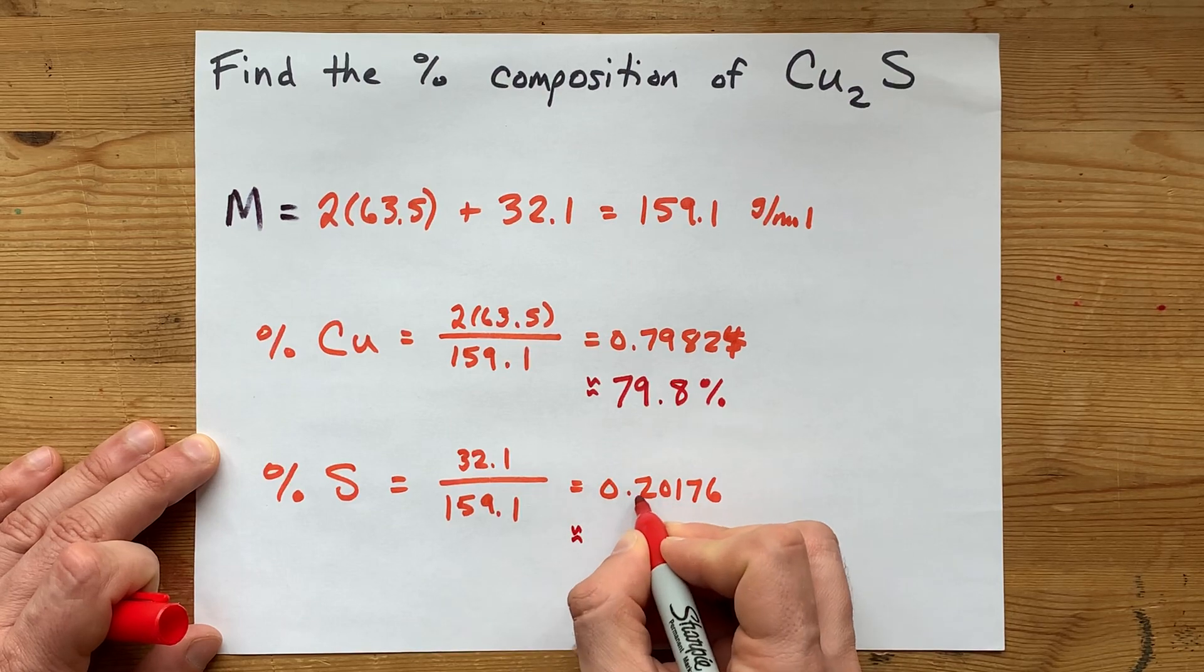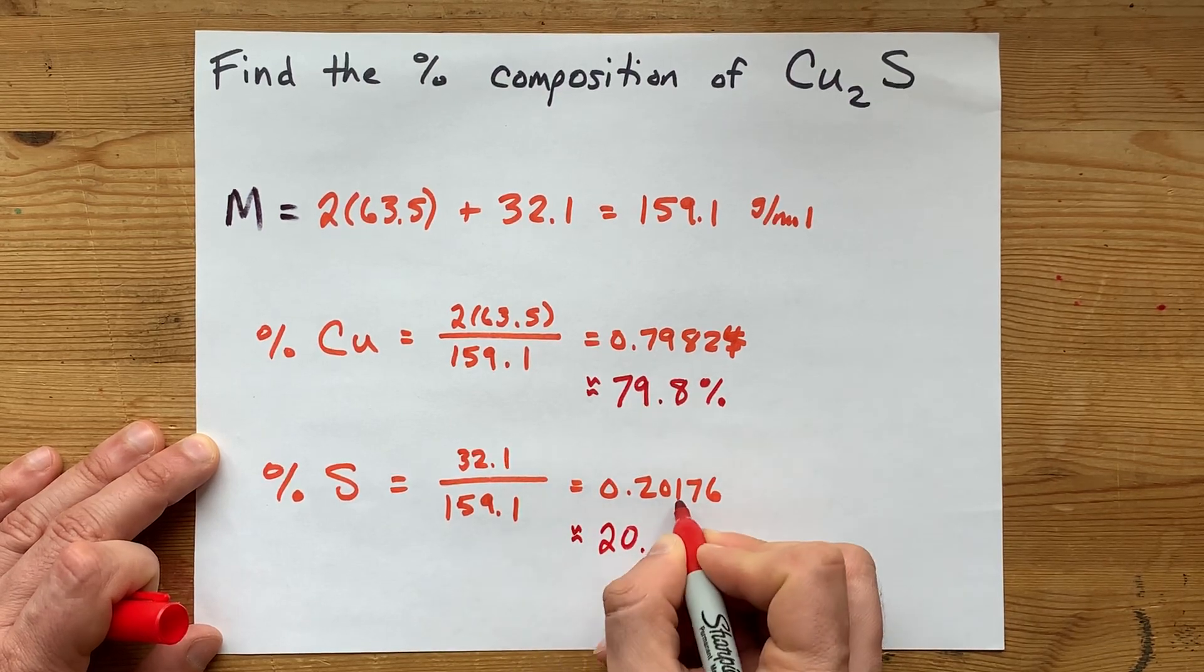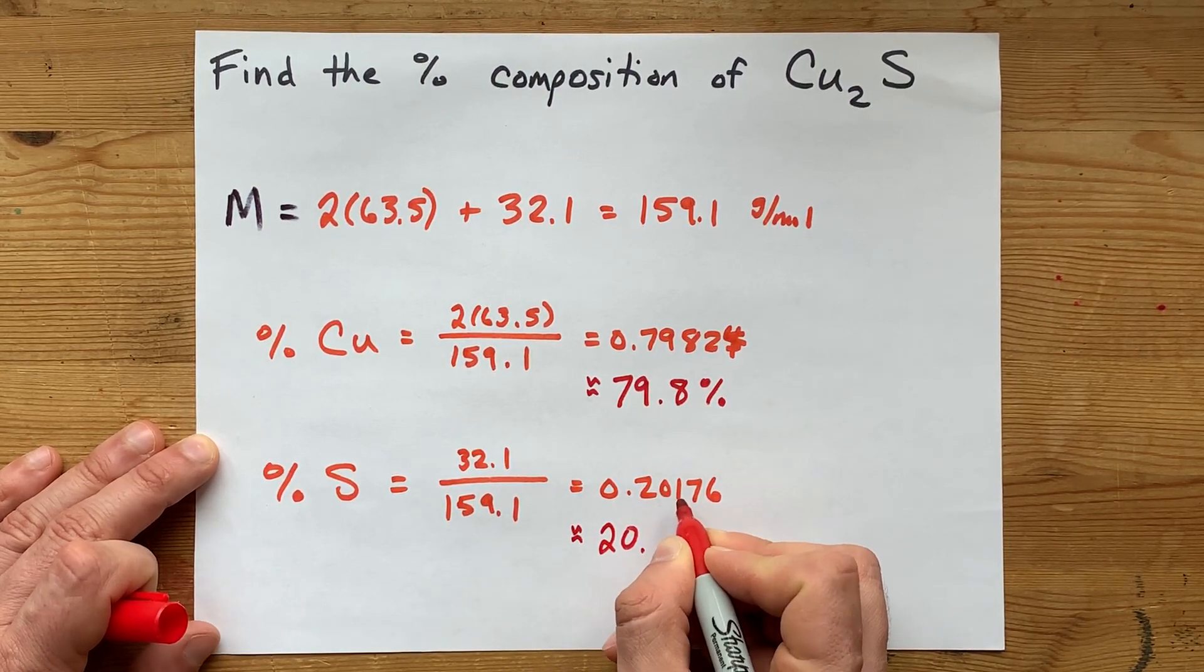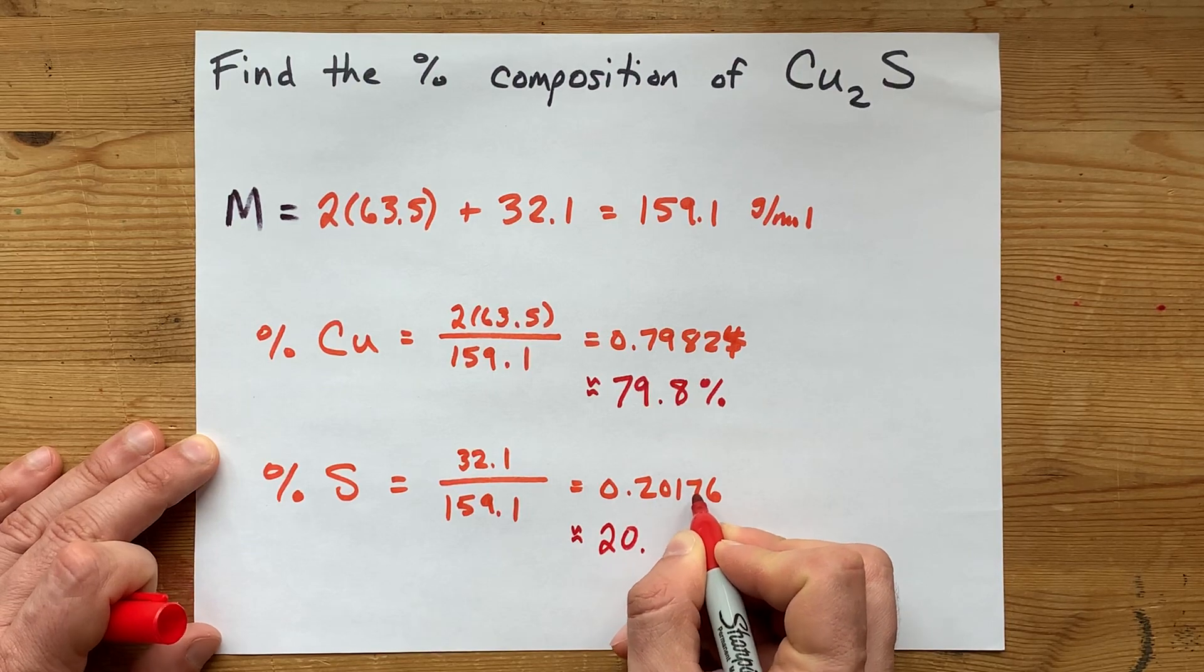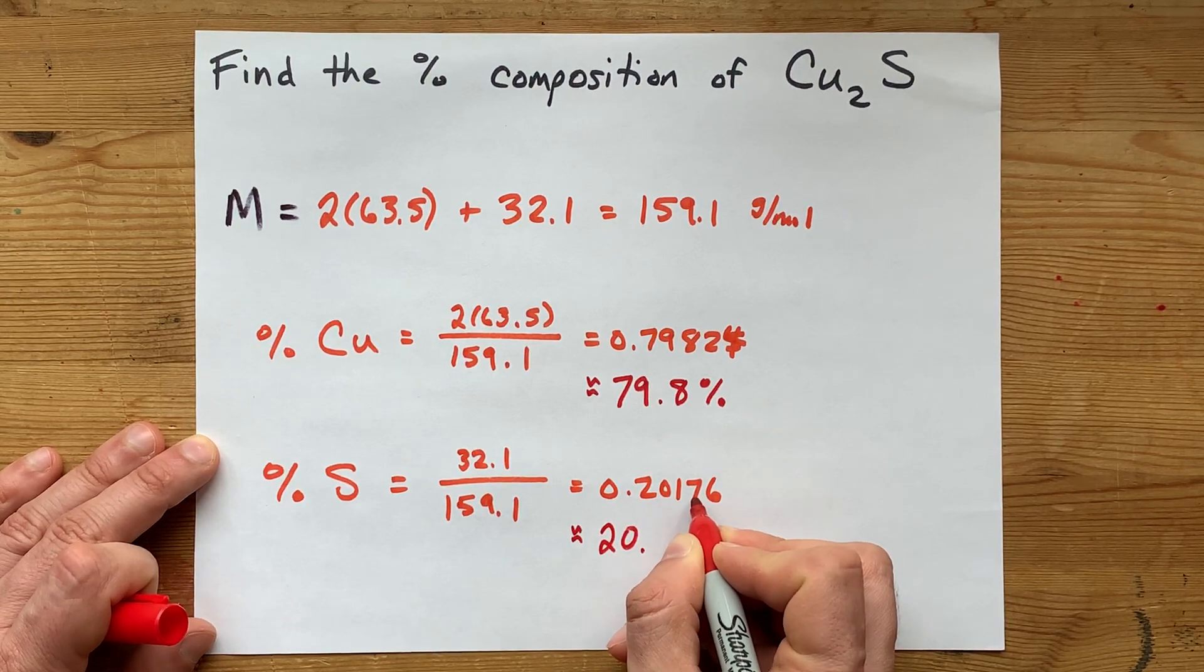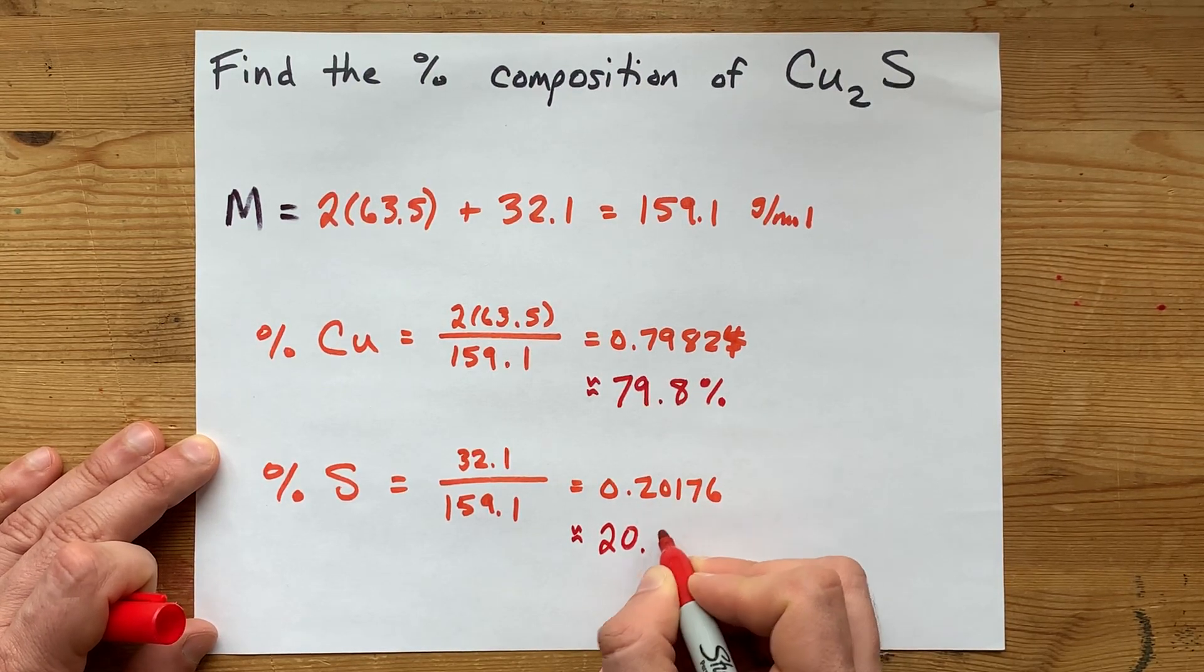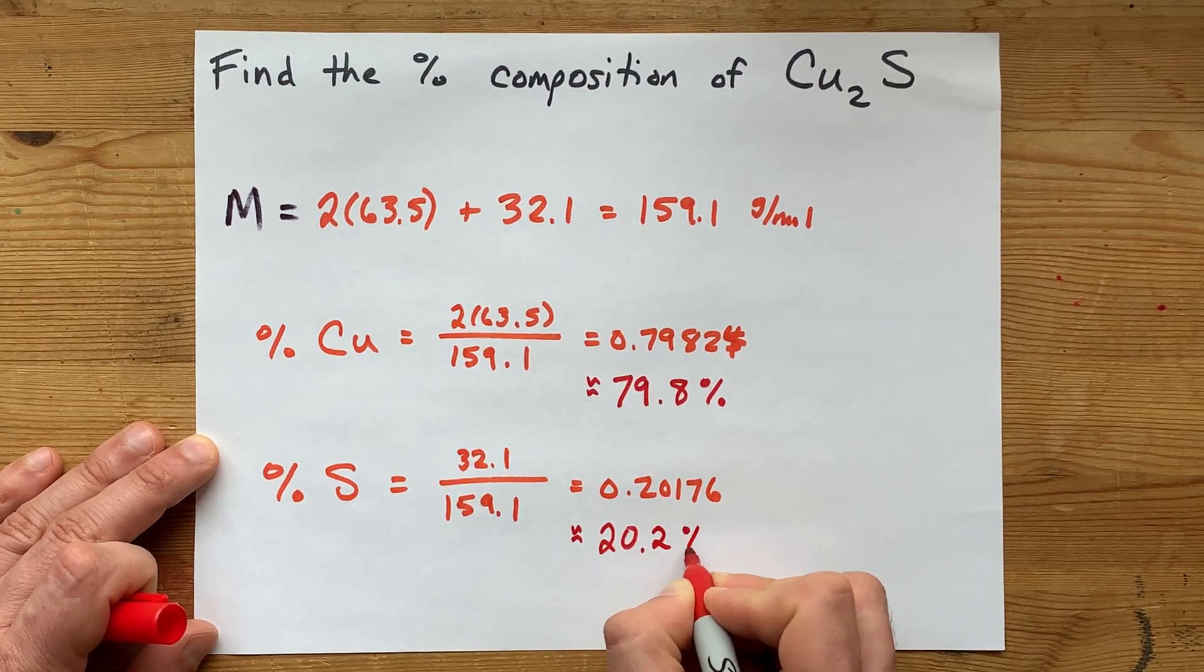And here, 20 point, that's the third significant digit. The number after it is five or more. Well, it's more than five. So that means this one gets rounded up, and it's 20.2 percent.